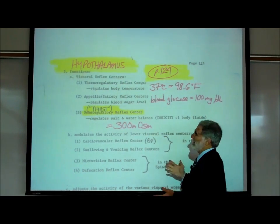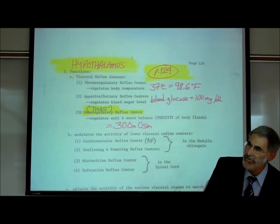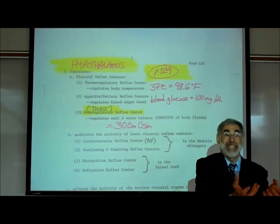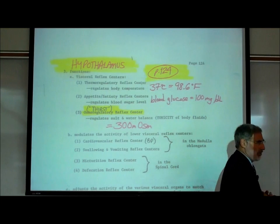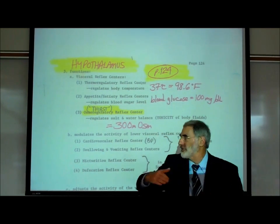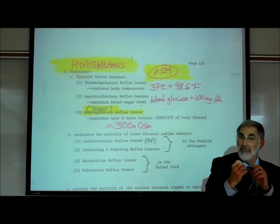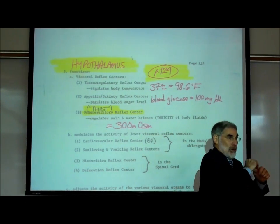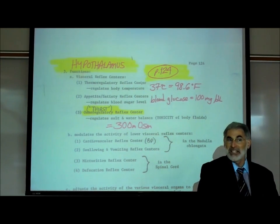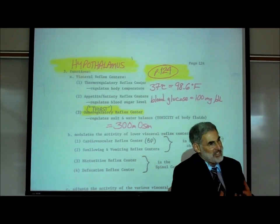This control center is commonly called the appetite satiety reflex center. Appetite means a physiological drive to eat, to raise your blood sugar level. Once you raise it up to that normal value — the set point — your physiological drive to eat goes away. We say you're satisfied, you are satiated — satiety.